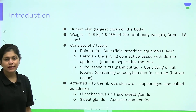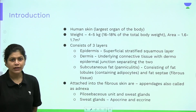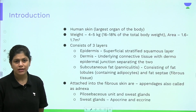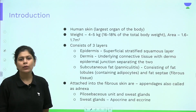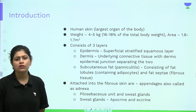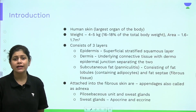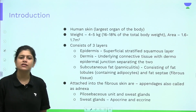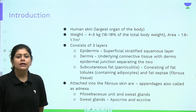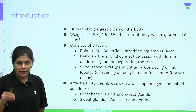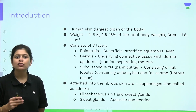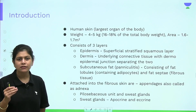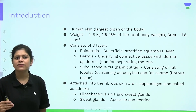The human skin is the largest organ of the body. Its weight is 4 to 5 kgs, which is approximately 16 to 18 percent of the total body weight, and the area is 1.6 to 1.7 meter squares. The entire skin can be divided into three layers: the epidermis, the dermis, and the subcutaneous fat.